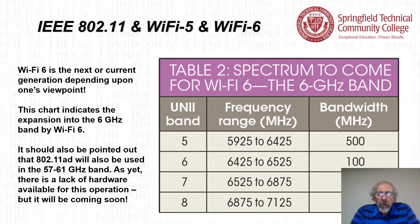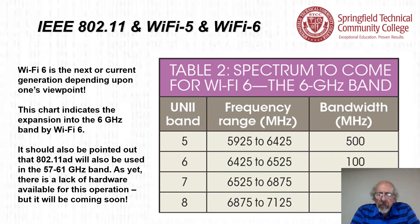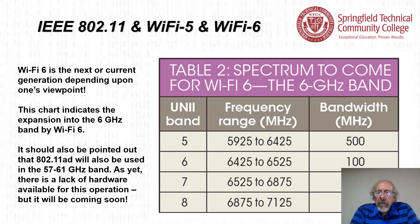In this table, additional spectrum comes from the 6 gigahertz band for Wi-Fi 6. Wi-Fi 6E is the current generation, depending upon one's viewpoint, and the chart shows the expansion into the 6 gigahertz band. UNII bands 5, 6, 7, and 8 are going to be adopted, with a frequency range from 5925 megahertz all the way up to 7125 megahertz — a grand total of 1200 megahertz of bandwidth available.